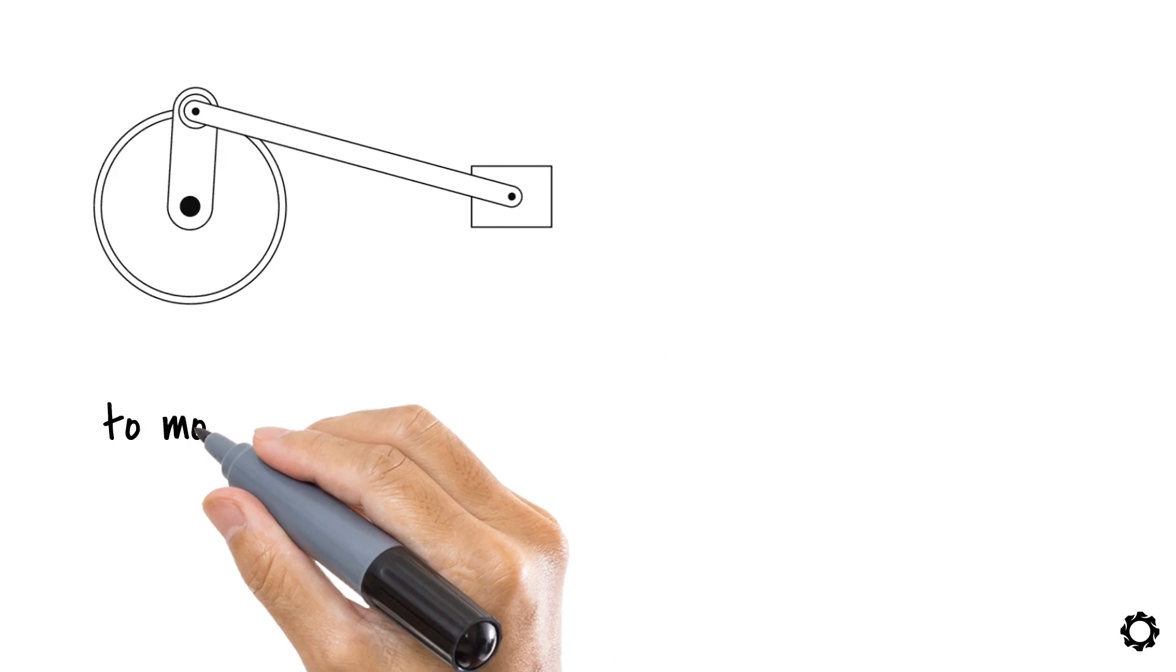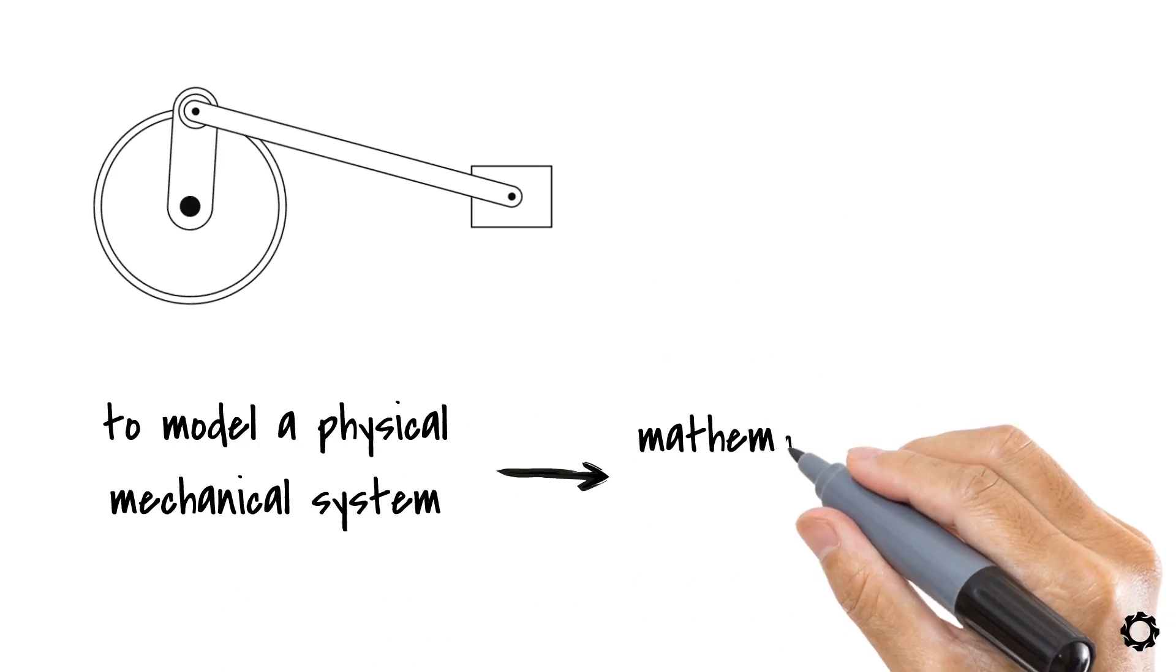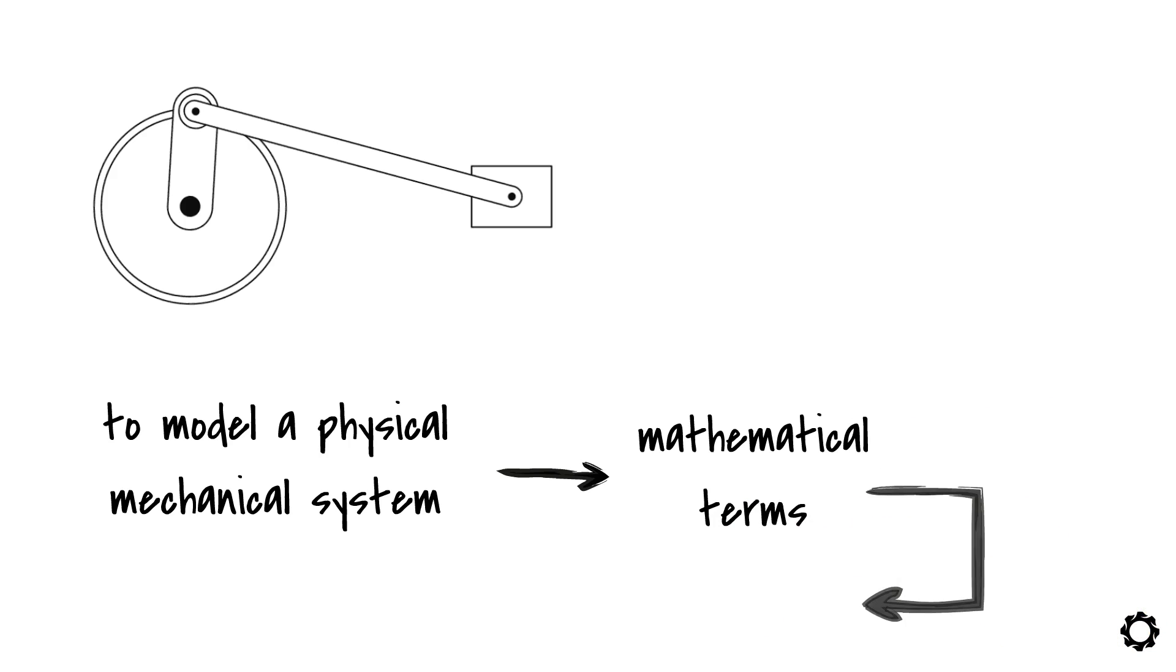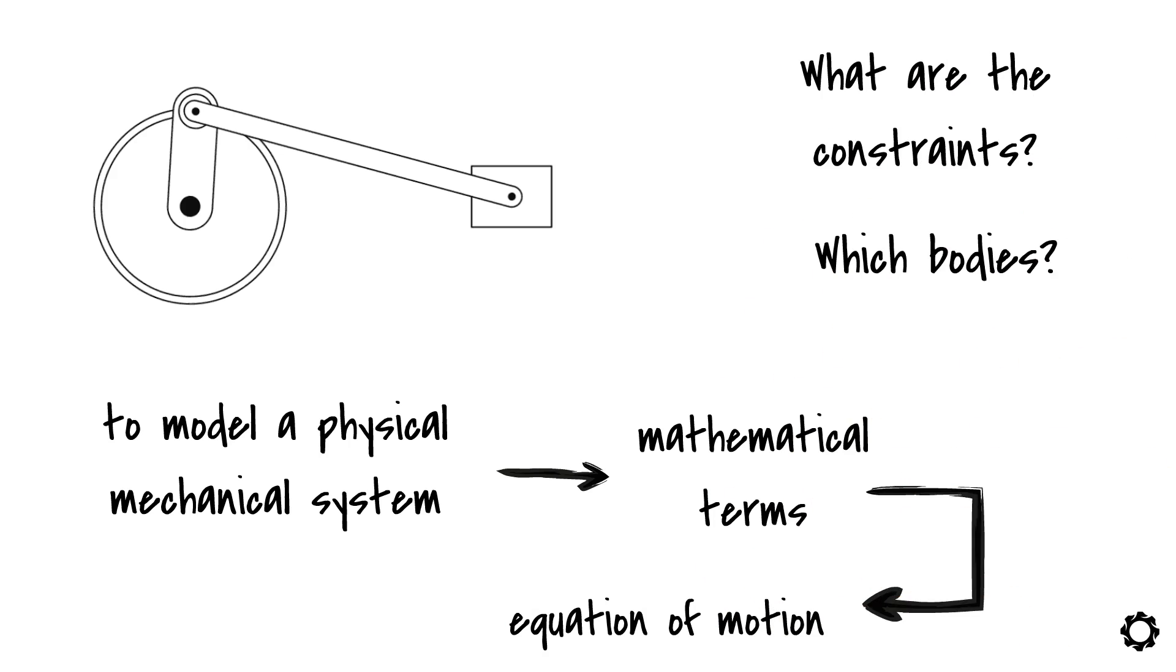We have also said that to model a physical mechanical system, we need to be able to describe the system in mathematical terms. And that was basically done with the equation of motion of the system. Well, we need a way to tell mathematically what are the constraints and which bodies they are attached to.